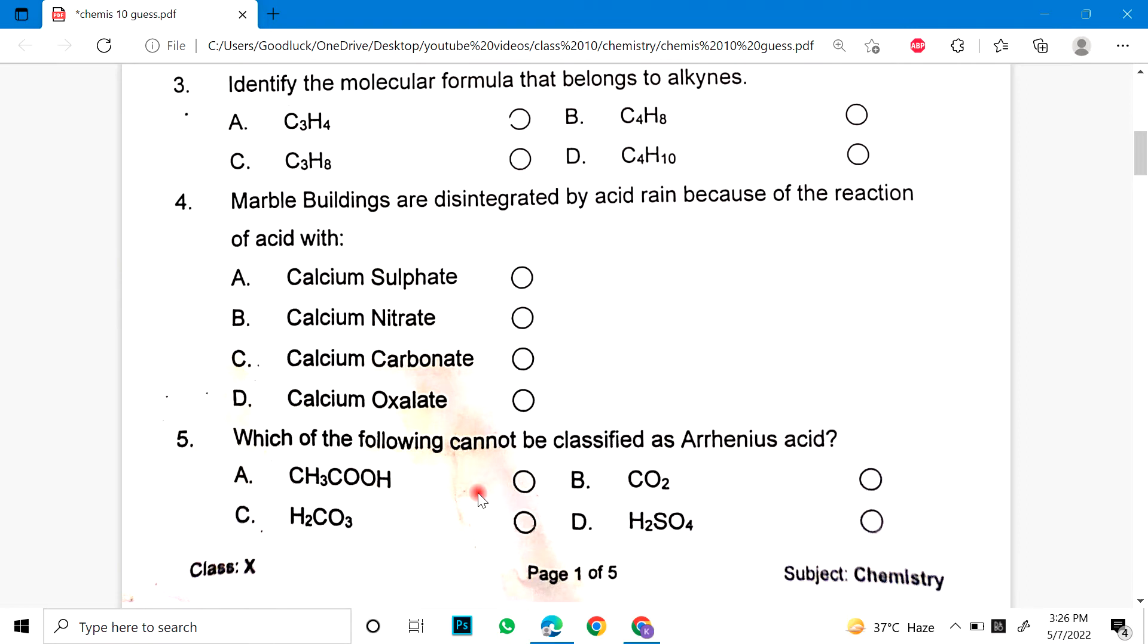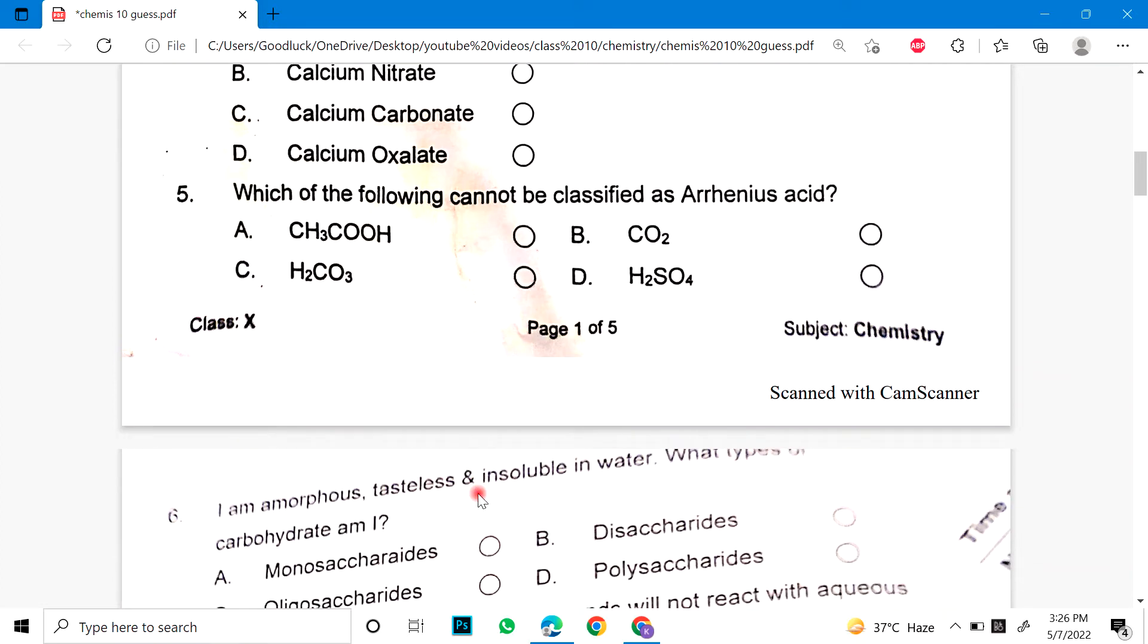Number 4. Marble buildings are disintegrated by acid rain because of the reaction of acid with calcium sulfate, calcium nitrate, calcium carbonate, and calcium oxalate. Number 5. Which of the following can not be classified as Arrhenius acid? Mainly I think here is the option. Means here.